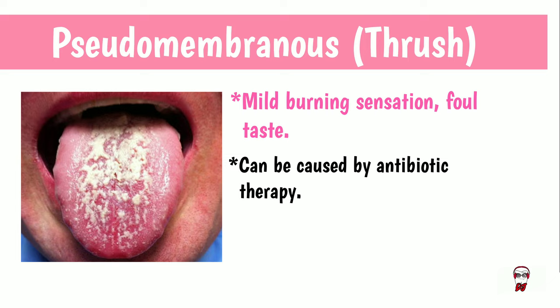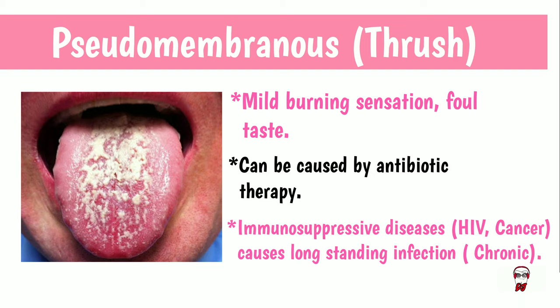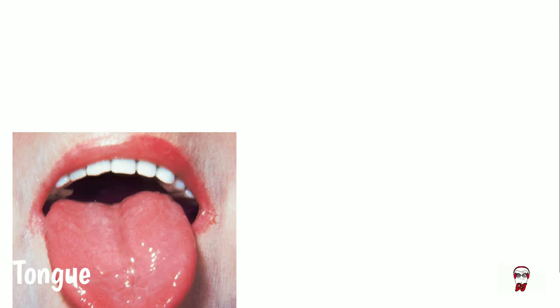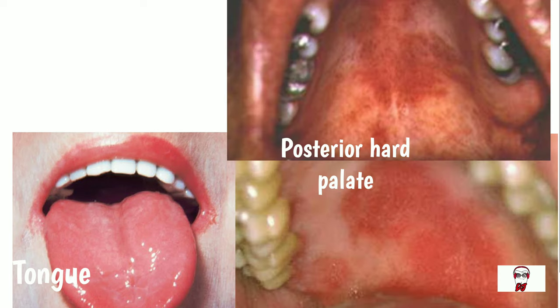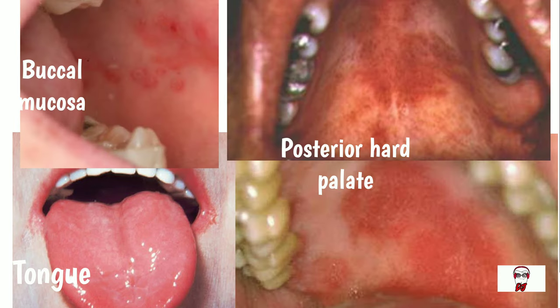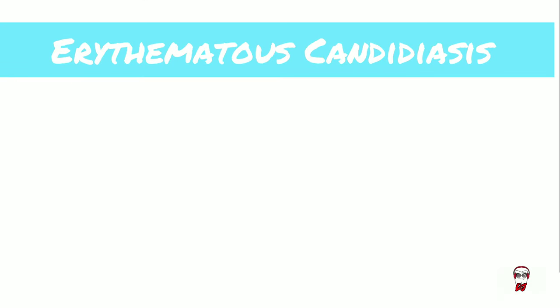Antibiotic therapy is the common cause of acute pseudomembranous thrush. People with immunosuppressive diseases such as HIV or cancer cause a longer-standing infection, which leads to chronic thrush. I don't always appear as yellowish-white patches. Sometimes I give a reddened appearance to the dorsal tongue, posterior hard palate, and the buccal mucosa, in erythematous candidiasis.